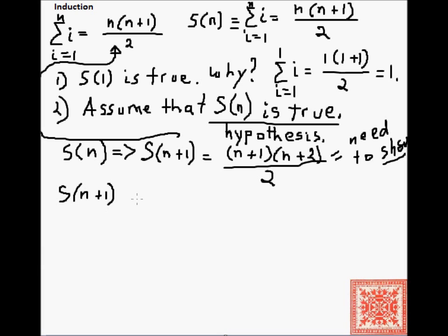S of n plus 1 is the sum of the first n integers plus the sum of the integer n plus 1. Now, let's use our inductive hypothesis and rewrite this. S of n plus 1 is equal to, by the inductive hypothesis, S of n can be written as n times n plus 1 over 2. Let's make that qualification here, that n is greater than or equal to 1. Let's rewrite S of n.